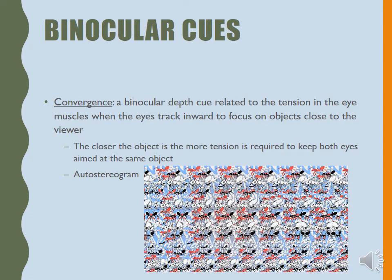The other binocular cue we have is convergence. If I'm sitting at my desk and I pick up my pen and bring it closer to my face, my eyes will converge — I'll go cross-eyed. Because of the muscles in my eyes tracking inward, it tells me the object is coming close. Anyone who's ever hit a softball or baseball — you always track the ball, and as the ball comes in, your eyes converge. It tells your brain how fast the ball is coming and how close it is.